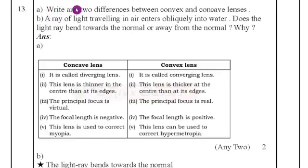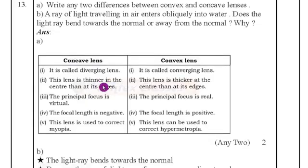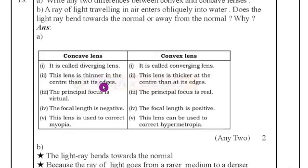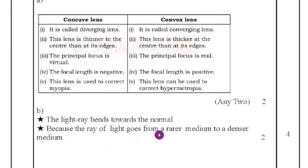Thirteenth question part A: write two differences between convex lens and concave lens. Part B: a ray of light traveling in air enters obliquely into water — does the light ray bend towards the normal or away from the normal, and why? The differences between convex and concave lenses are provided. For part B: the ray bends towards the normal, because the ray of light goes from a rarer medium (air) to a denser medium (water).